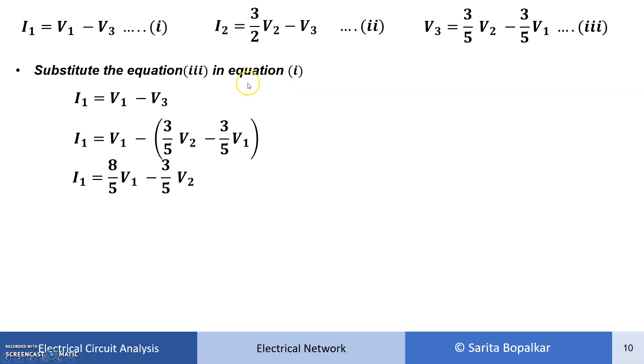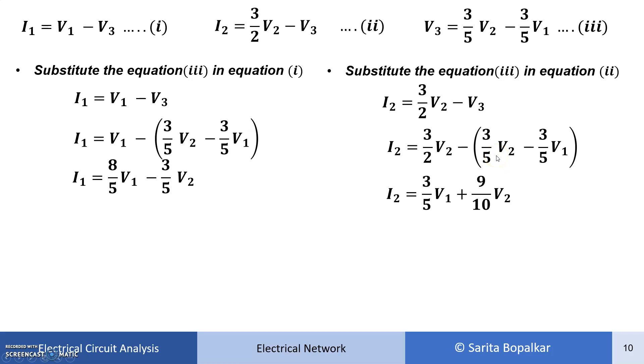Now next, we have to substitute V3 in this second equation also. Equation 2: we will put the value of V3 from this one. Now combine the V2 terms and V1 is there. So we will get I2 equals 3 by 5 V1 plus 9 by 10 V2. So I2 is a function of V1 and V2 now.